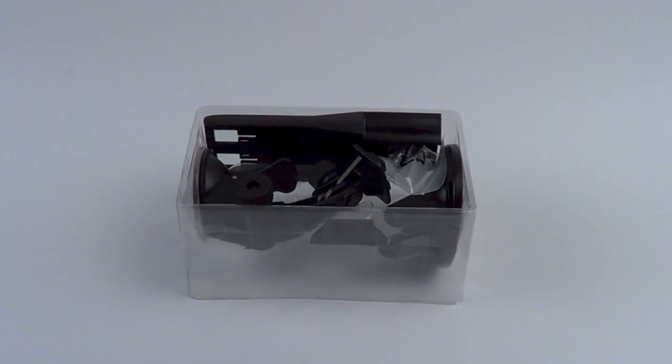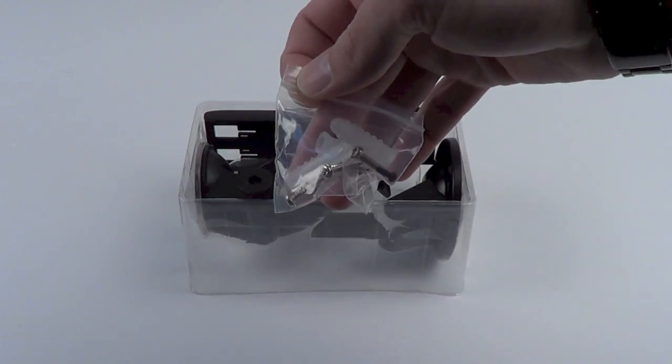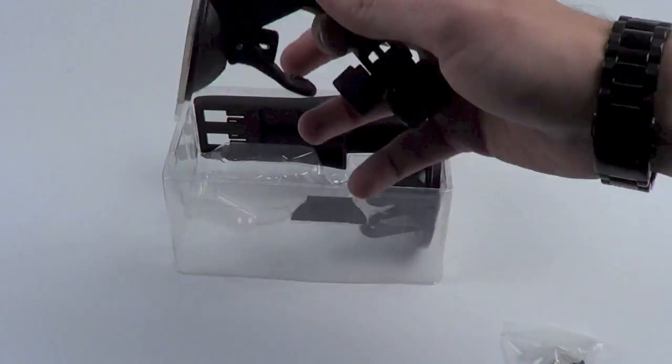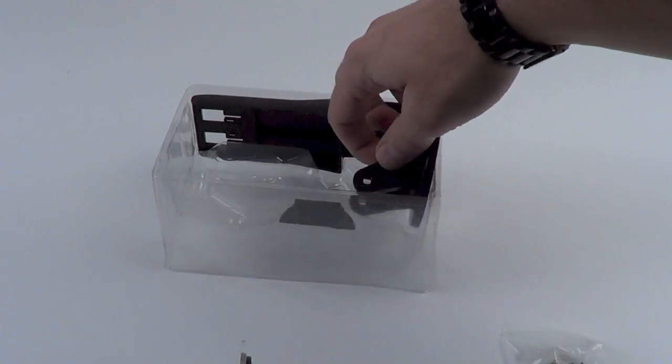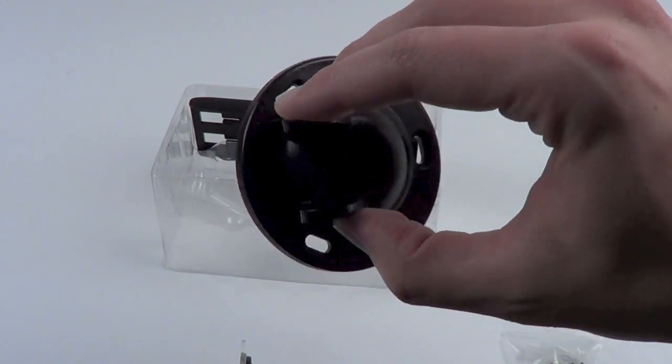The first mounting option you have is the included wall and window kits. The kit comes with the included hardware you need, including the screws and anchors. There is a bottom piece with the suction cup mount for aiming the antenna through a window.